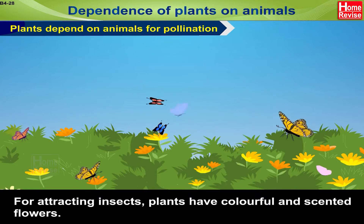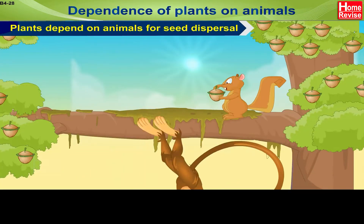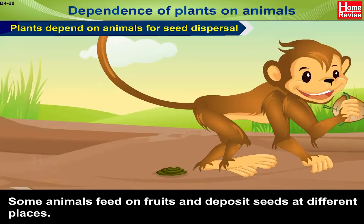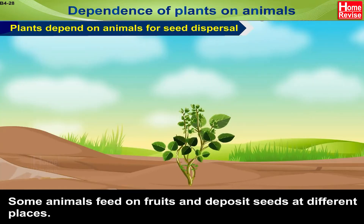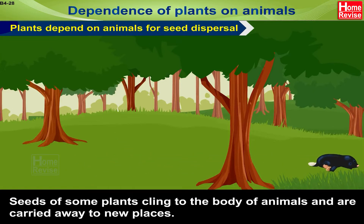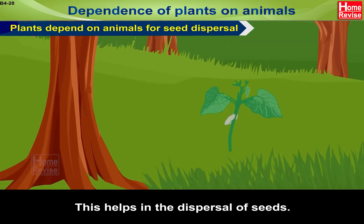Plants depend on animals for Seed Dispersal. Some animals feed on fruits and deposit seeds at different places. Seeds of some plants cling to the body of animals and are carried away to new places. This helps in the dispersal of seeds.